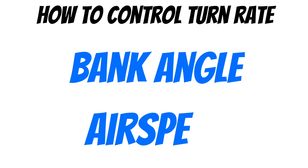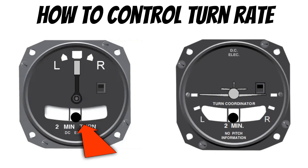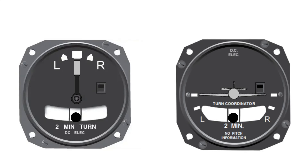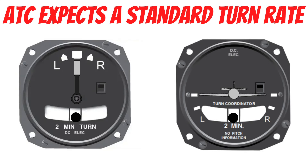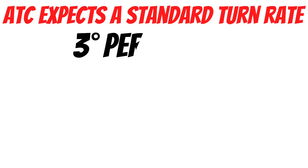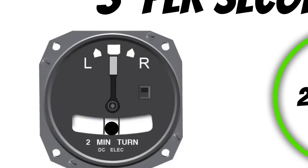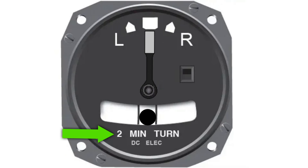Let's talk about how to control our turn rate. We know bank angle and airspeed affect it, but how do we know how quickly our airplane is turning? We can use one of these instruments. This is a turn and slip indicator, and this is a turn coordinator. They literally do the same thing — they're just ever so slightly different. Most of the time when you're flying in the weather, ATC is going to expect you to turn the airplane at a standard turn rate. The standard turn rate is three degrees per second, meaning if you turn a full 360 degrees, it's going to take you two minutes — that's why a lot of these instruments are labeled with two minutes. If the needle is centered on the outer mark, you're turning at three degrees per second.